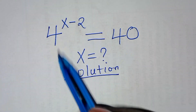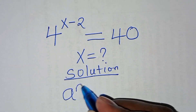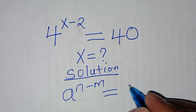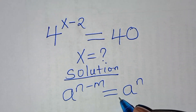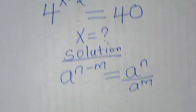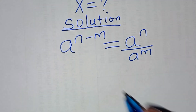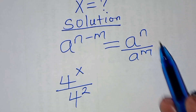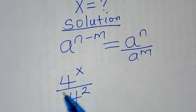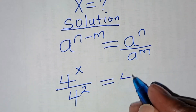We have that 4 to the power x minus 2. This is in the form of a to the power n minus m, which we can express as a to the power n divided by a to the power m. Applying this exponent property, we'll have 4 to the power x divided by 4 to the power 2. This is equal to 40.